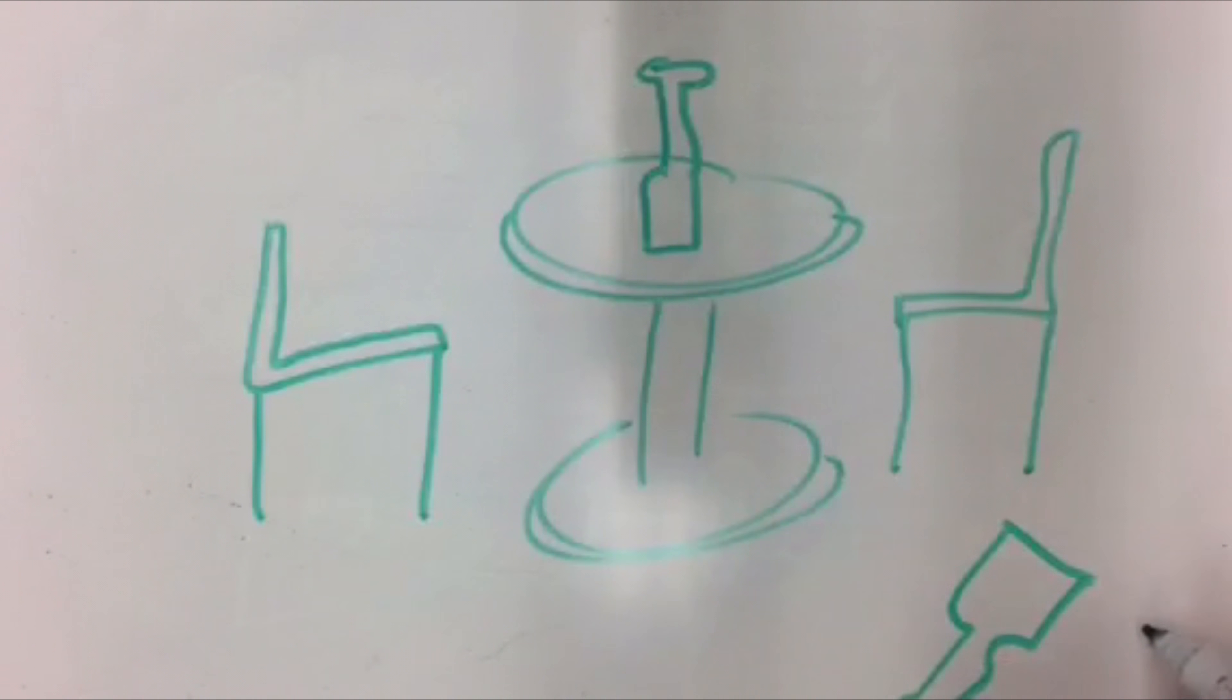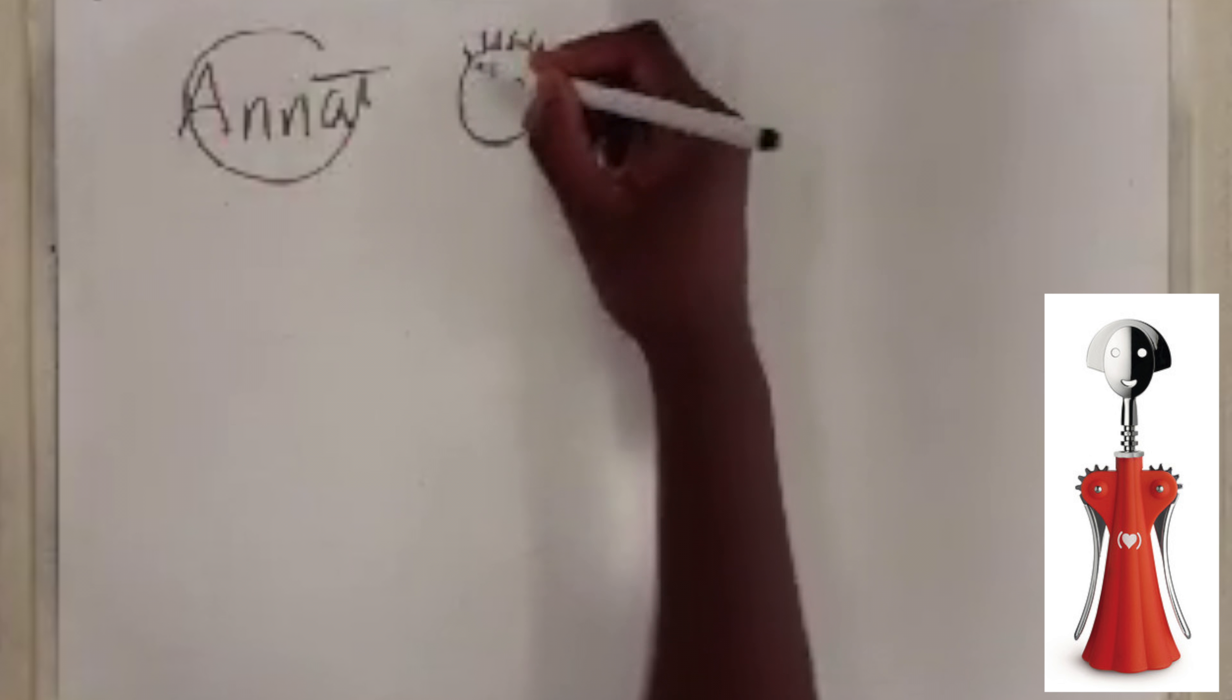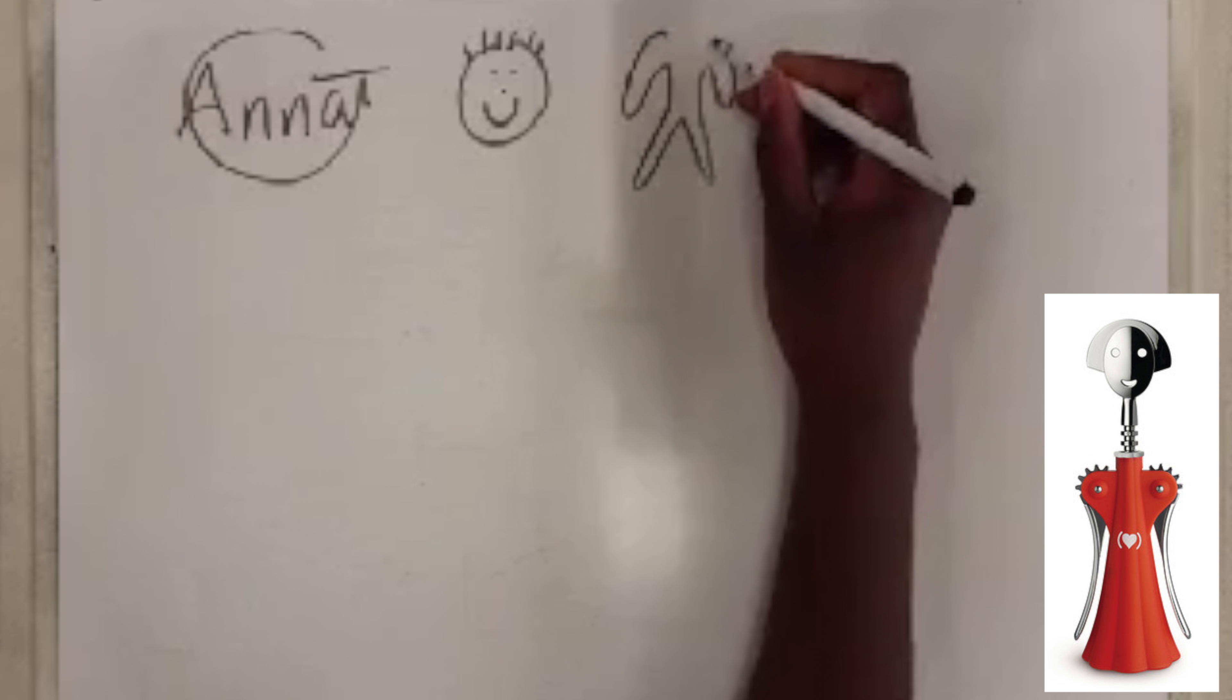The corkscrew is used in many different restaurants around the world as it's cheap, easy to use and looks good. Anna G is a classic corkscrew designed by Alessandro Mendini. It follows the design procedure function after form.